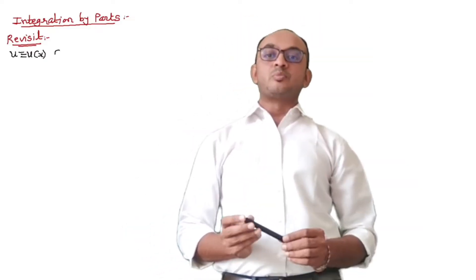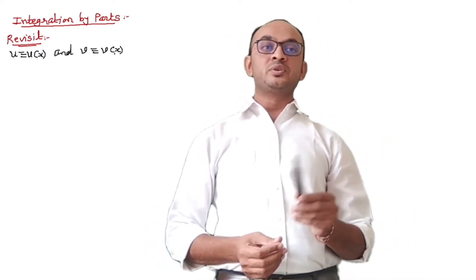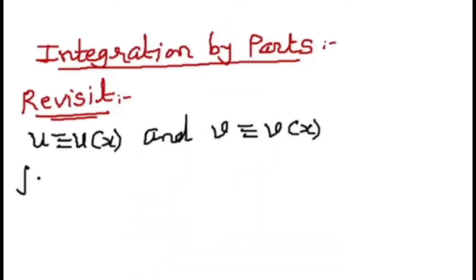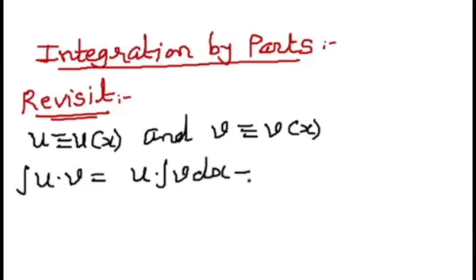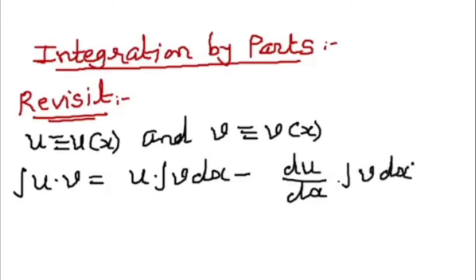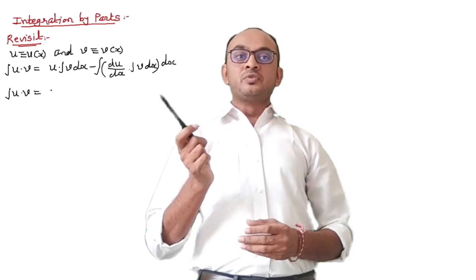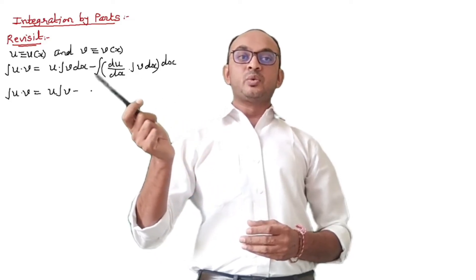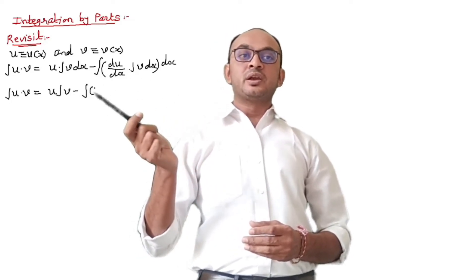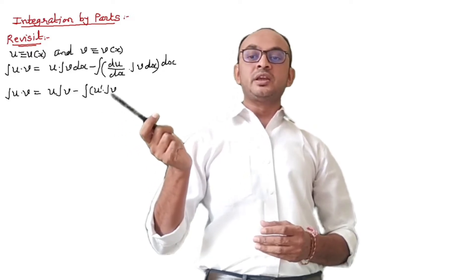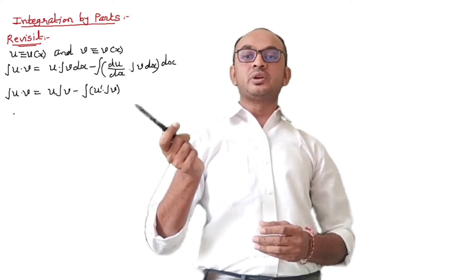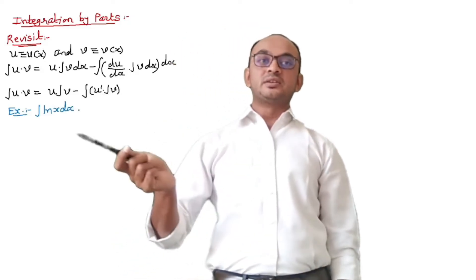Let us start with the revision of integration by parts. Suppose we have two functions u and v, both functions of x. Then the integral of u·v can be represented as: u times the integration of v, minus the derivative of u times the integration of v, all integrated. For simplicity: ∫uv = u·∫v − ∫(u' · ∫v).